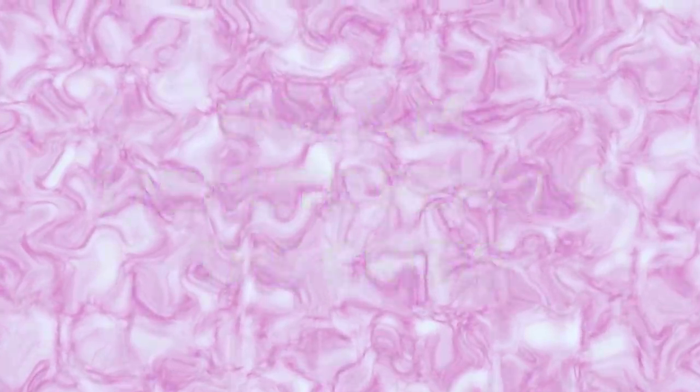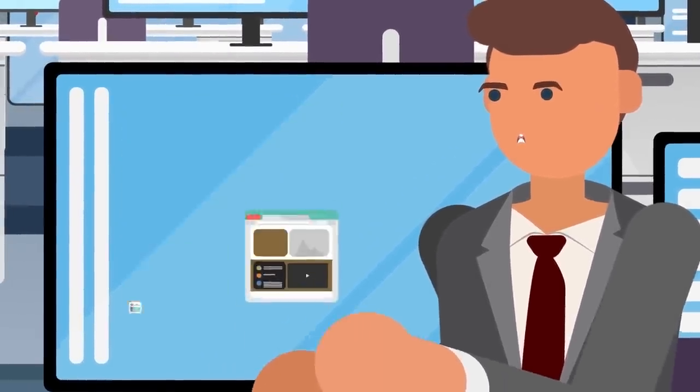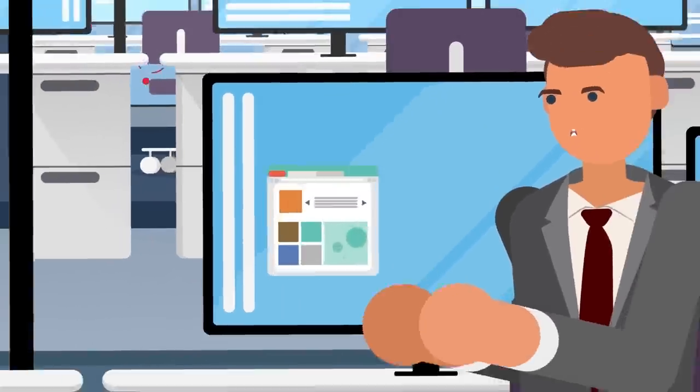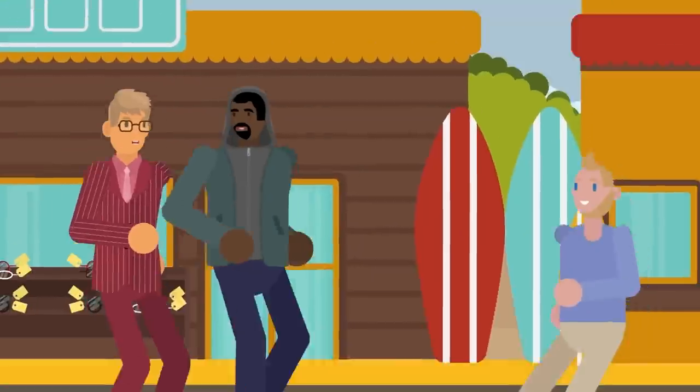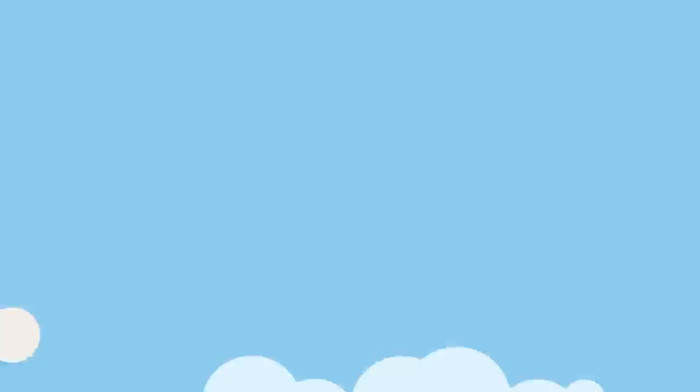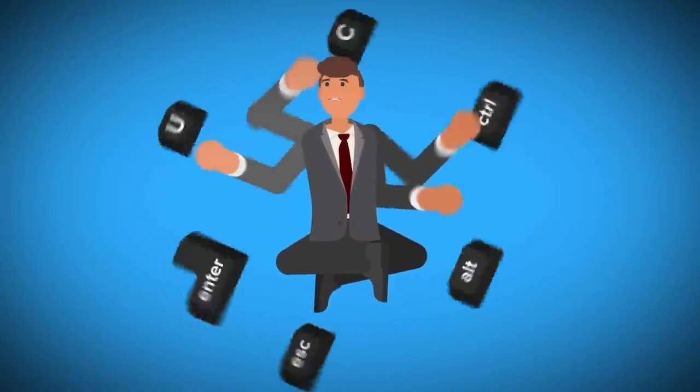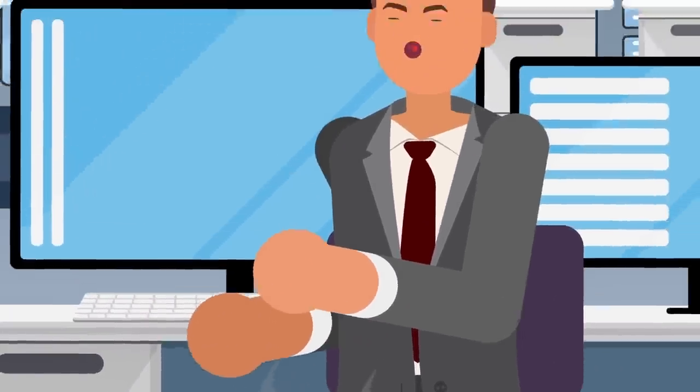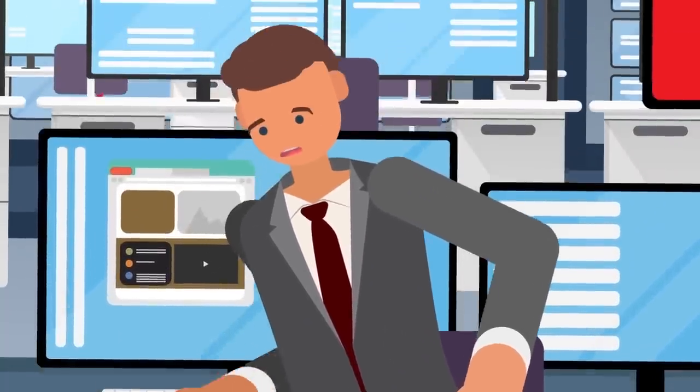8:04 AM, 1 minute before the crisis. Fred pushes several buttons on the terminal keyboard. Every day starts the same. Before anything else, he must test the Emergency Missile Warning System to ensure everything is in working order. This responsibility falls on him and each of his co-workers whenever there is a shift change. The safety of everyone in Hawaii is literally in their hands. Fred has done this procedure every day for years, and when he starts a shift, his body takes over and automatically runs through the motions. Fred reaches for the test initiation button, but as he moves his arm, knocks his coffee off the desk and onto his lap. Fred yelps as the hot liquid soaks through his pants. It's going to be one of those days, he says to himself.